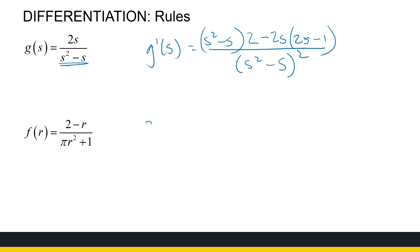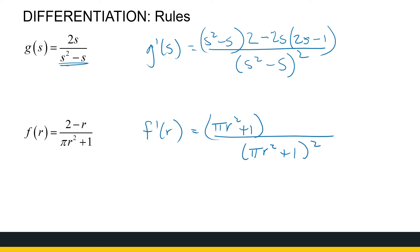The last quotient rule example: the derivative of f with respect to r. Denominator squared: (pi r squared plus 1) squared. Write down the denominator, (pi r squared plus 1), then the derivative of the numerator (2 minus r) is minus 1 — put it in brackets — minus the numerator (2 minus r) times the derivative of the denominator. Note that pi is just a number, so the derivative of pi r squared plus 1 is 2 pi r. That is the product and quotient rule — it takes a lot of practice to get these right.